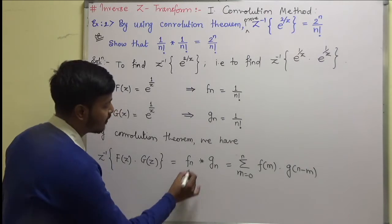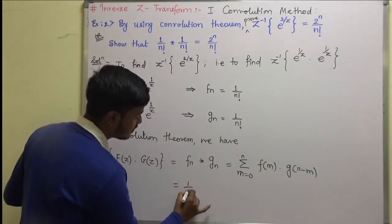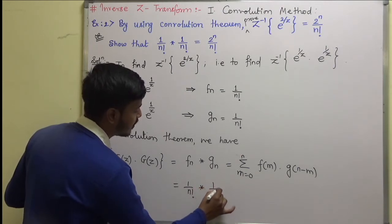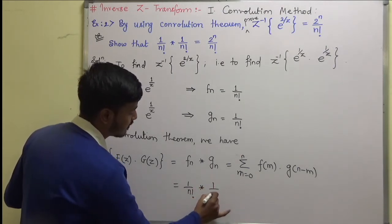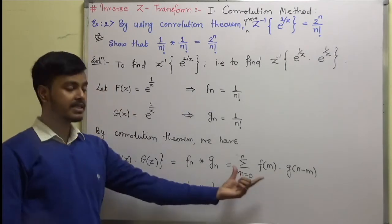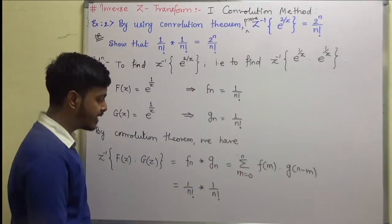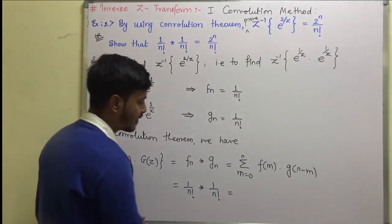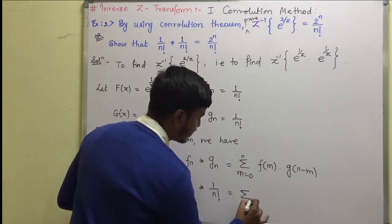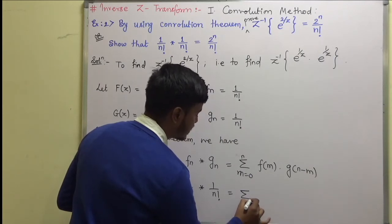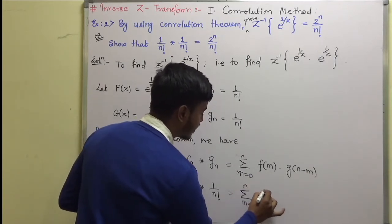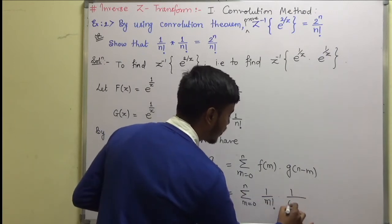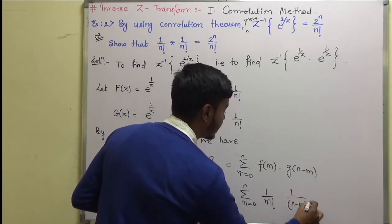We have f(n) = 1/n! and g(n) = 1/n!. So we can write this as the summation from m = 0 to n of 1/(m!) times 1/((n−m)!).